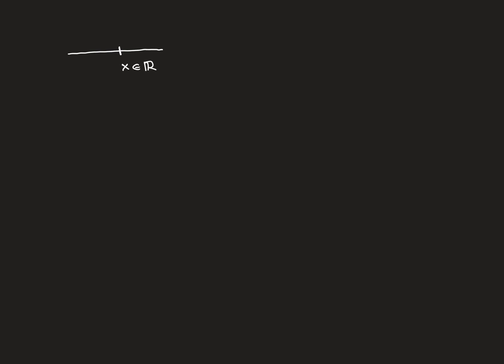Here is the approach. Suppose we want to show a function is Riemann integrable over some interval [a, b]. We need to show that the infimum of the upper Riemann sums — which I'll write as inf U — equals the supremum of the lower Riemann sums — written sup L. The strategy is to show there exists some real number x such that the upper Riemann sums get indefinitely close to x from above, and the lower Riemann sums get indefinitely close to x from below.